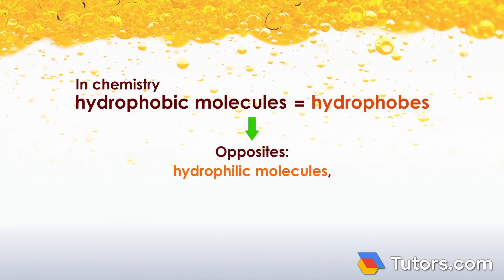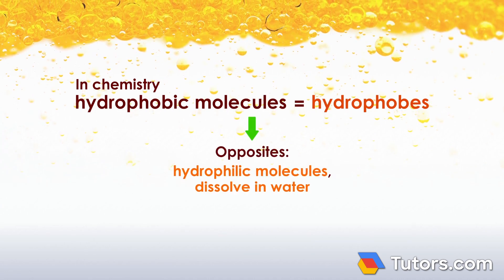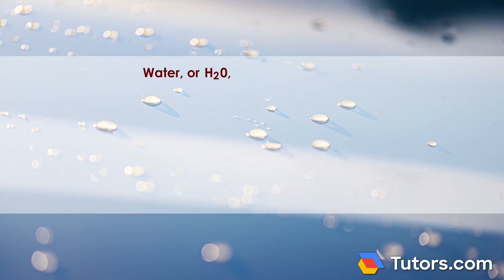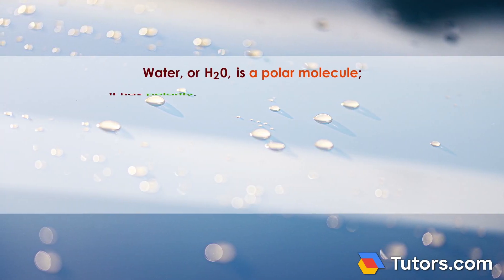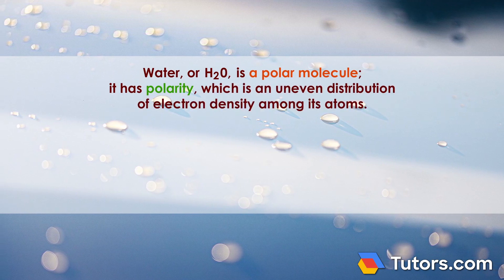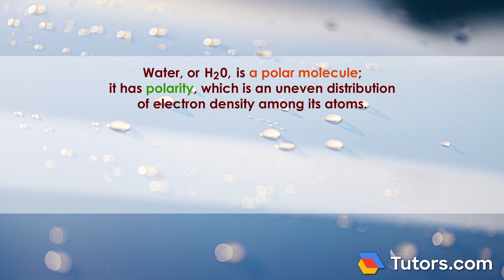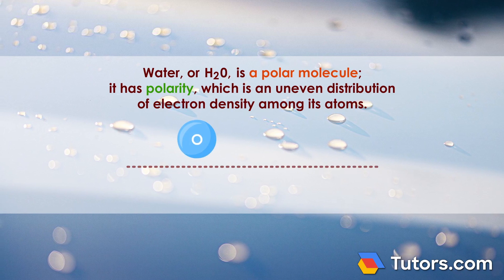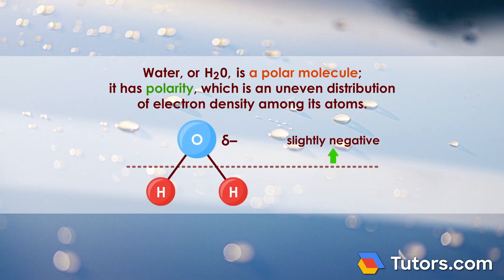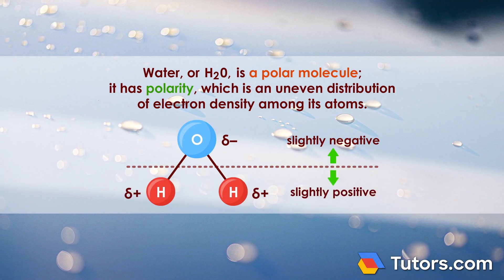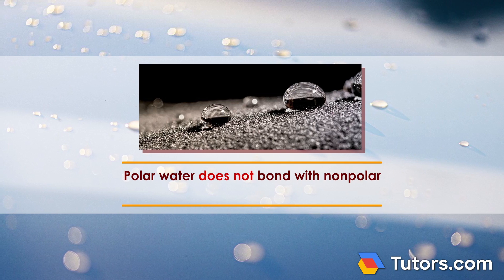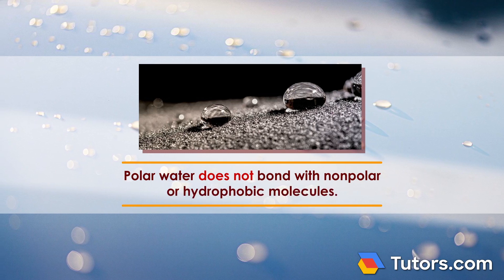Their opposites, hydrophilic molecules, dissolve in water. Water, or H2O, is a polar molecule. It has polarity, which is an uneven distribution of electron density among its atoms. The oxygen side of any water molecule is slightly negative, while the hydrogen side is slightly positive. Polar water does not bond with non-polar or hydrophobic molecules.